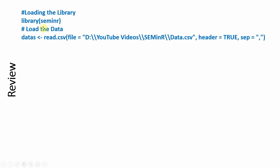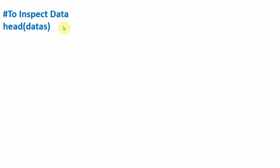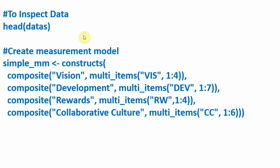This is how you load the library. You load the data into a particular object using this function — this is step one. The next step, you inspect your data to make sure everything is alright. Following that, we specify our measurement model through the constructs function, which further defines each of these constructs as composites. All this is then stored in the simple measurement model object. Be careful about your inverted commas, your brackets, and the format because this is a programming language — a missing bracket is a syntax error.